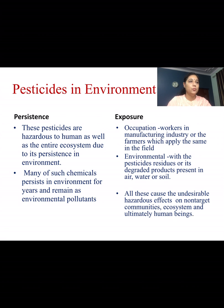Pesticides are hazardous to humans as well as the entire ecosystem due to their persistence in the environment. Many such chemicals persist in the environment for years and remain as environmental pollutants. Exposure can occur through occupation — in workers in the manufacturing industry or farmers applying them in the field. Residues remain in air, water, and soil, causing exposure to the entire ecosystem and undesirable hazardous effects on non-target communities.